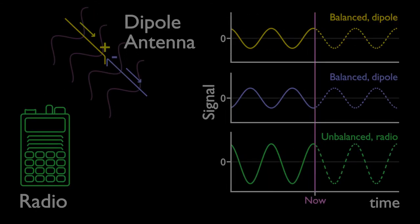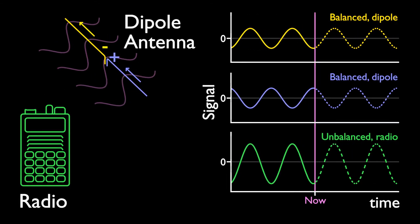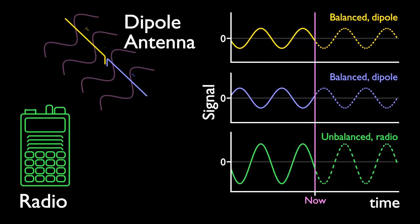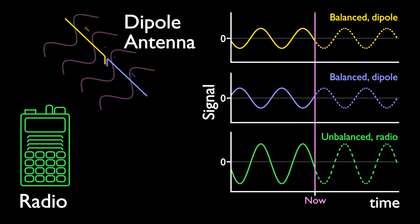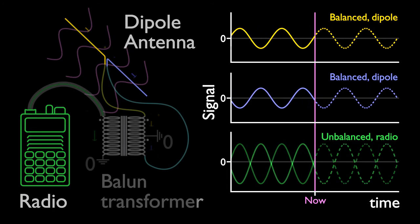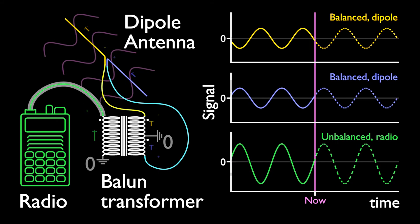To sum up, we have learned two ways how to convert the balanced signal to unbalanced one by baluns. I explained to you the principle of the coil balun, also known as transformer balun,